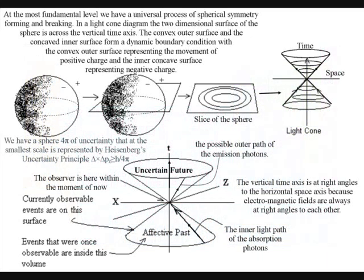In this video I am going to try and explain this using the light cone diagrams of relativity. At the most fundamental level we have a universal process of spherical symmetry forming and breaking. In a light cone diagram, the two-dimensional surface of the sphere is across the vertical time axis. The convex outer surface and the concave inner surface forms a dynamic boundary condition, with the convex outer surface representing the movement of positive charge and the inner concave surface representing negative charge.